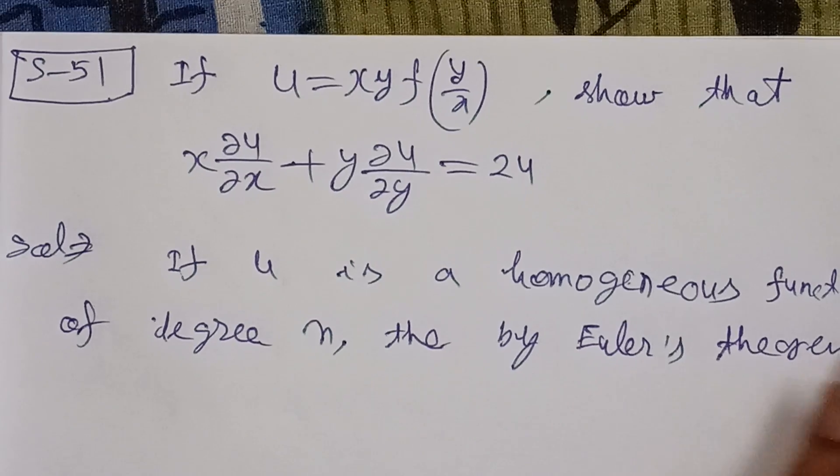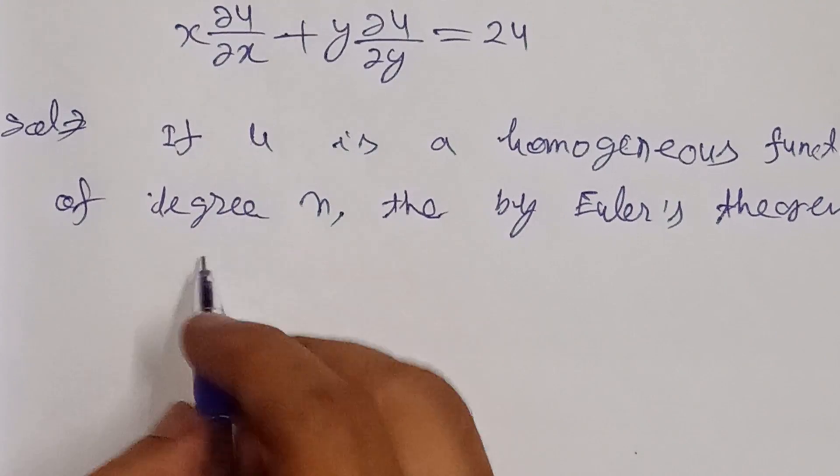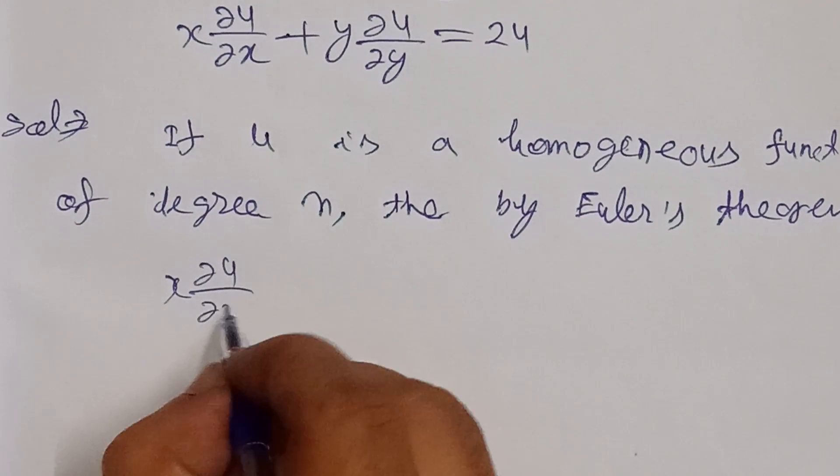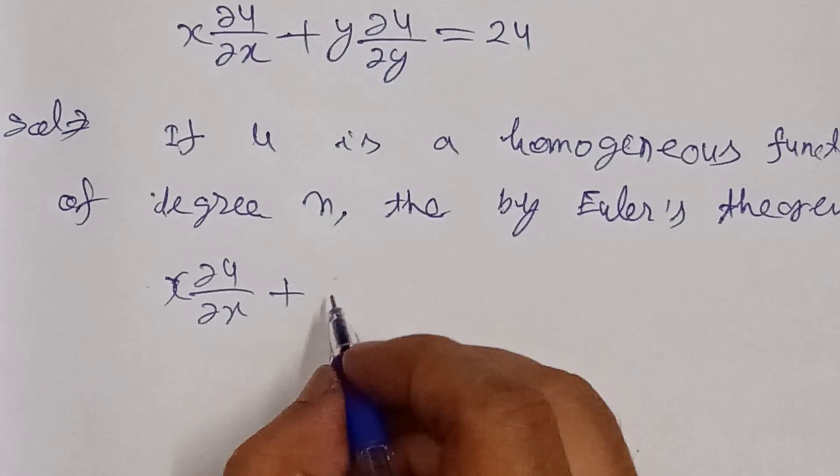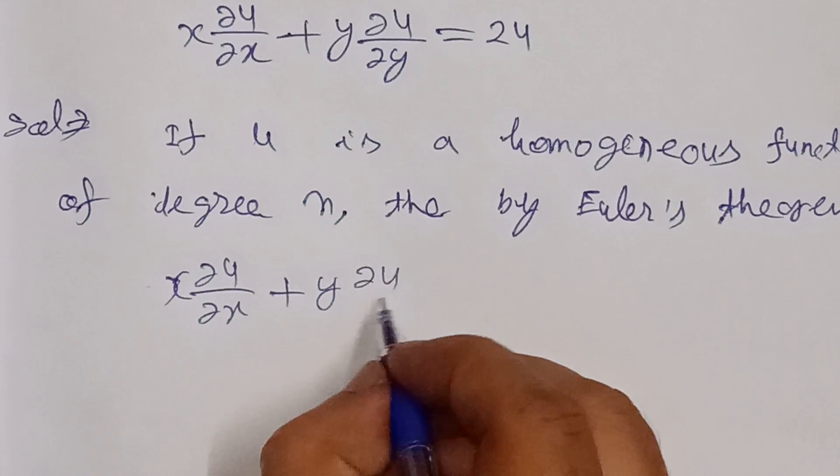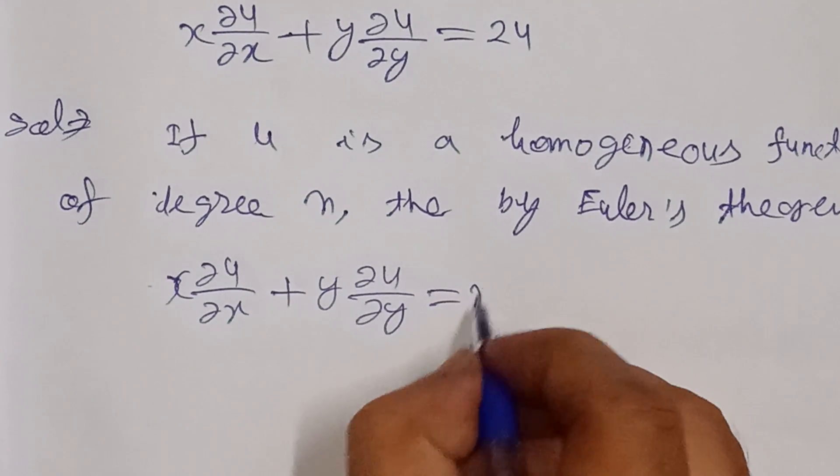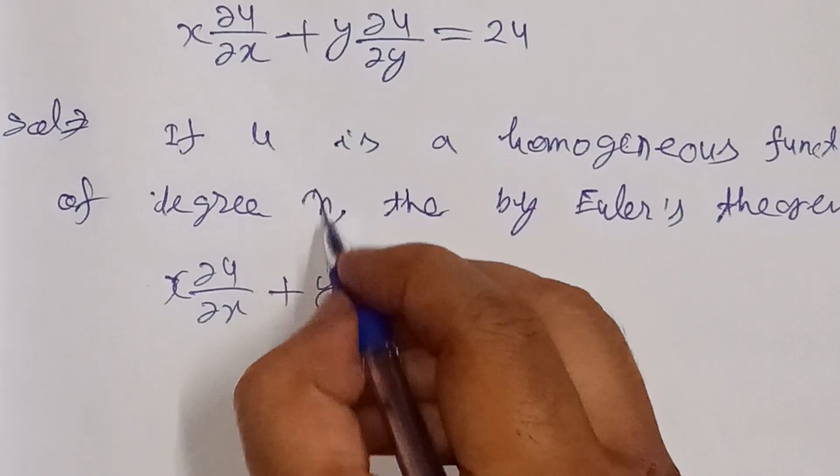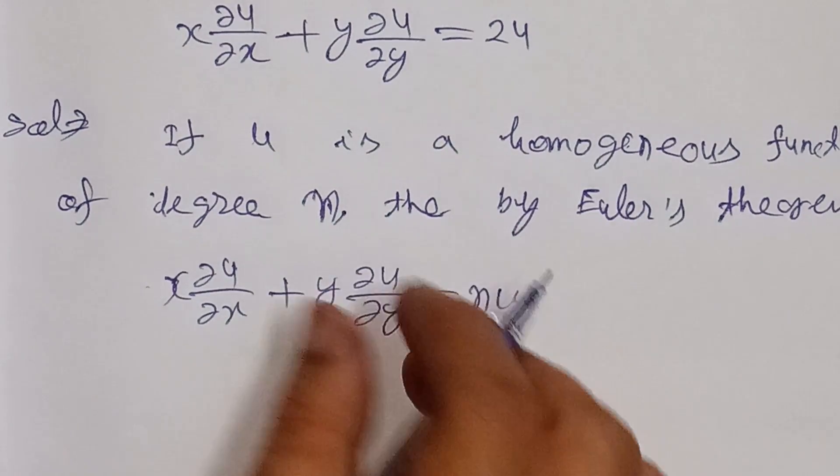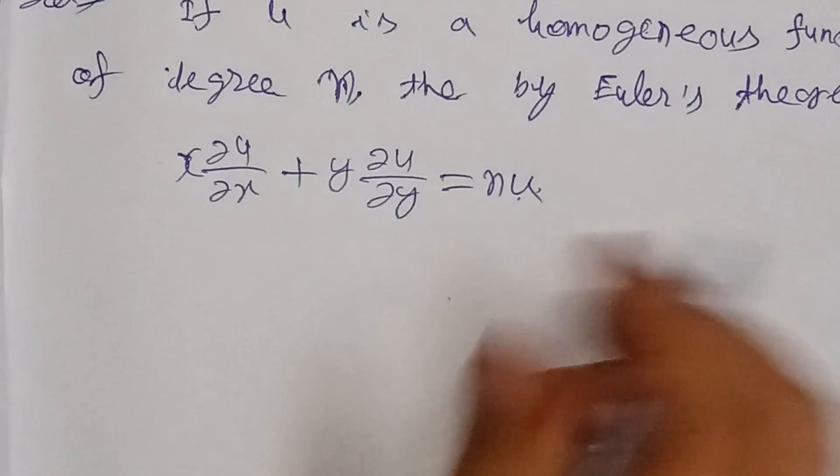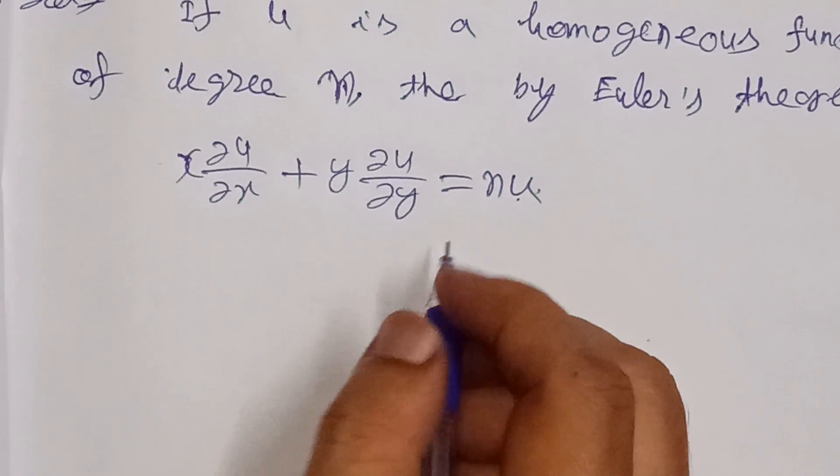We know that x del u over del x, where u is partial differentiation with respect to x, plus y del u over del y equals n times u. This is our formula.